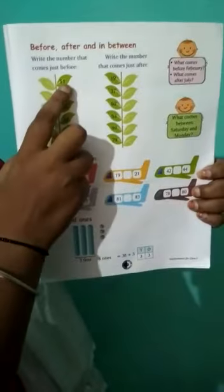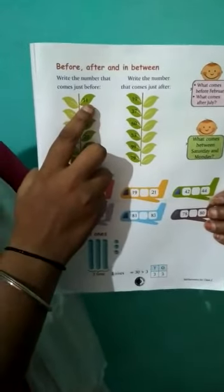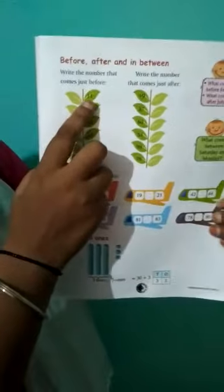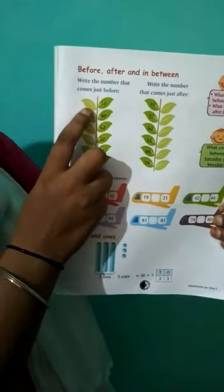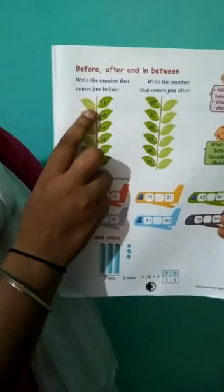Here your first question you see. Write the number that comes just before. So your first question is 11. So what comes before 11? 10 is the answer. 10 comes before 11.